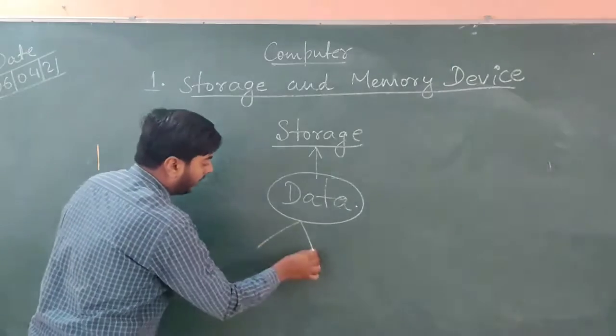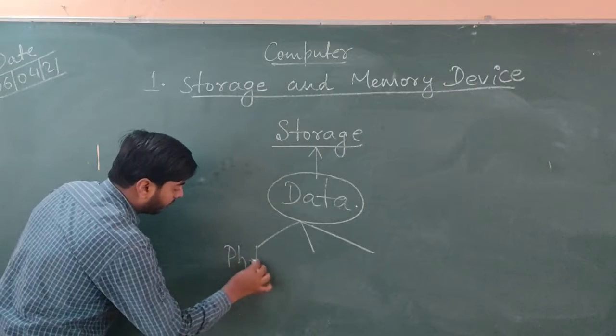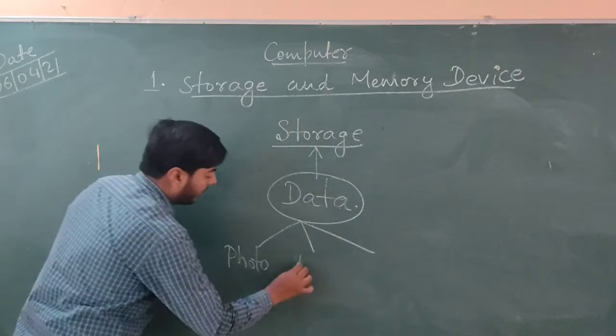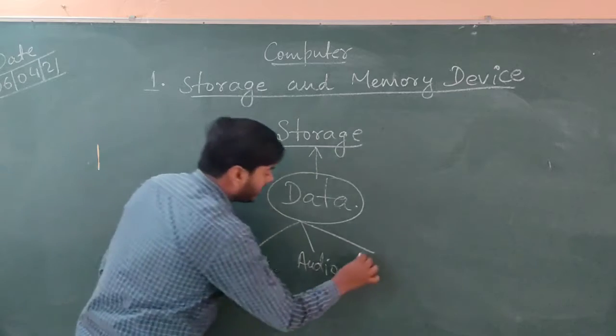And data are stored in what forms? Data comes in three forms. The first one is photo, second one is audio, and the third one is video.